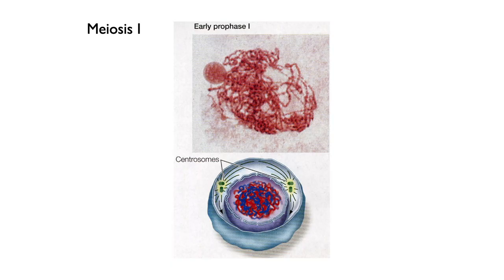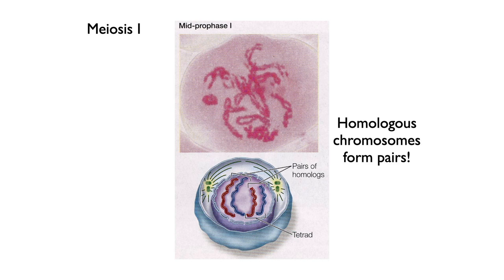So here's prophase of meiosis one — you'll also see it called prophase one. In a lot of ways this is like prophase of mitosis: we get condensation of the chromosomes, doubling of the centrosomes, breakdown of the nuclear envelope, and spindle fibers reaching in and contacting everything. But there are some differences. The big one is that the homologues have to pair up. In mitosis the two copies of chromosome 1 can just ignore each other anywhere in the cell, but in prophase of meiosis one the homologous chromosomes have to find each other.